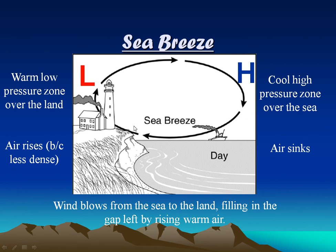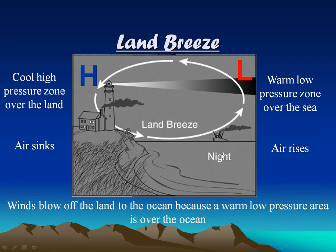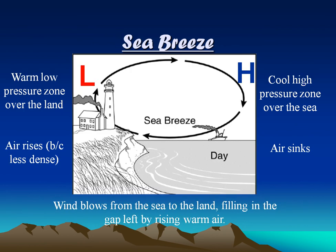Now, anybody who's gone swimming at night knows that the water holds on to the heat longer, whether at the beach or in a pool for a midnight swim. The ocean or pool stays warm, whereas the sand or the deck of your pool gets cooler. So the breeze then blows the opposite direction, and we call it a land breeze. Day and night, the wind is always blowing because of these differences in pressure.